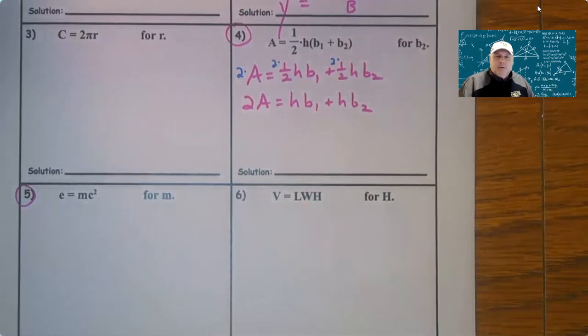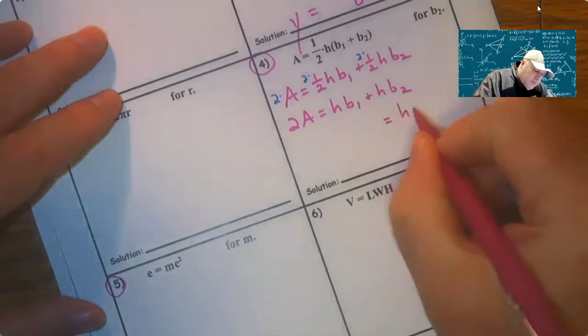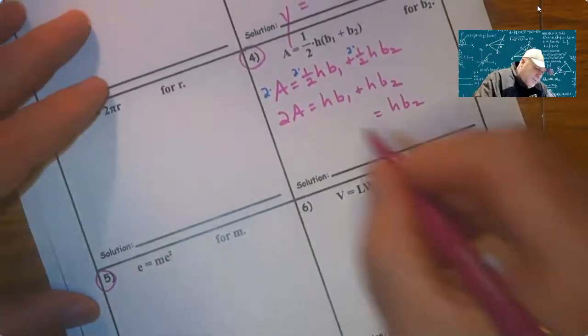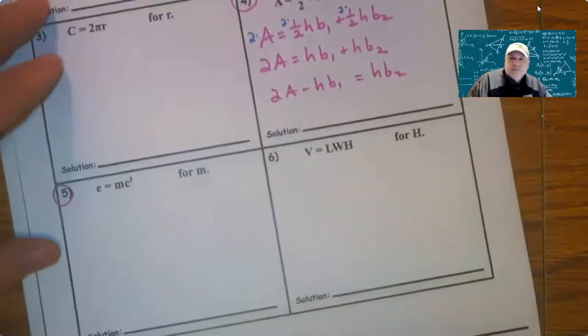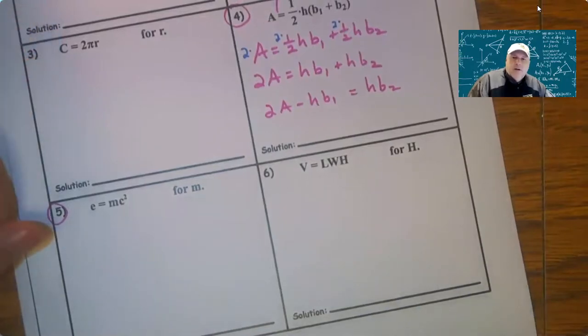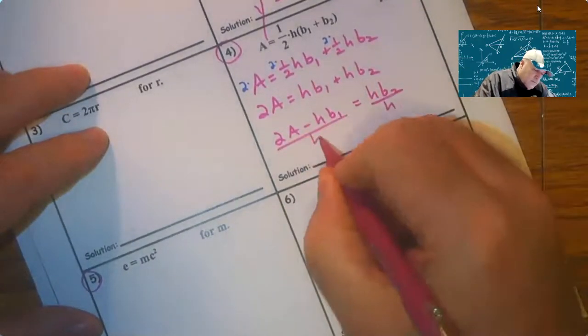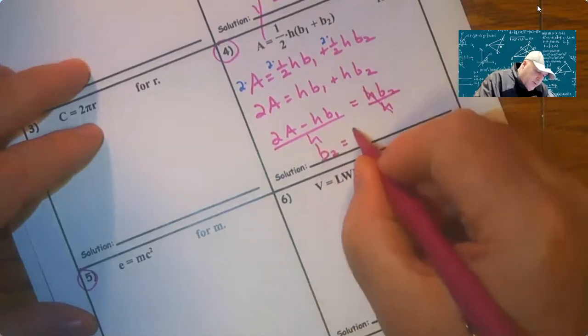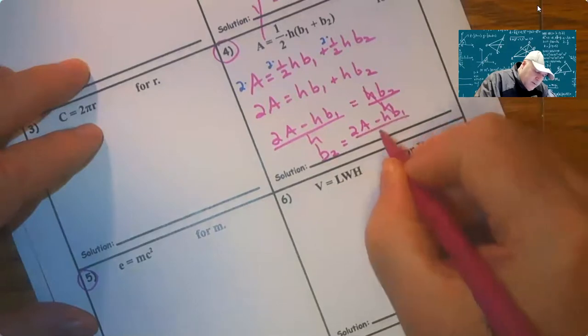So always note that if that variable gets replicated when you multiply to eliminate parentheses, you have to go back to the previous step and divide by the expression that h is multiplied by. Here it's not a problem. So b2 is what we want. So I want to know what does h times b2 equal? 2A minus h times b1. Now we subtract the h times b1 over, we're going to divide both sides by h. So b2 equals 2A minus h times b1 over h.